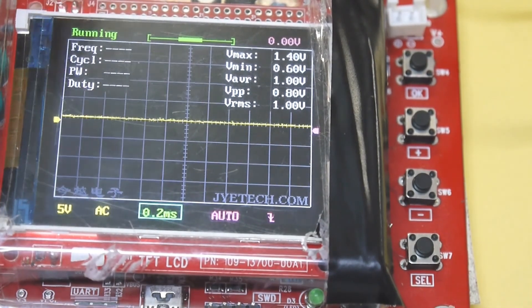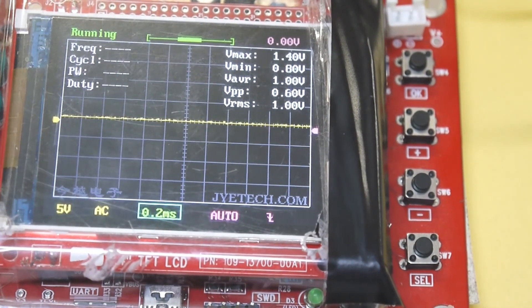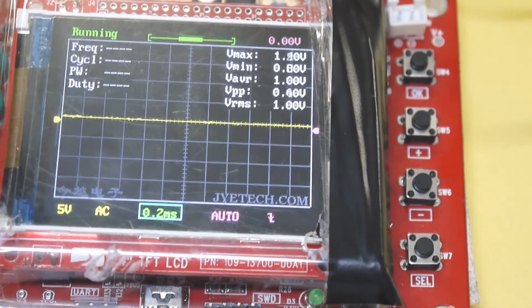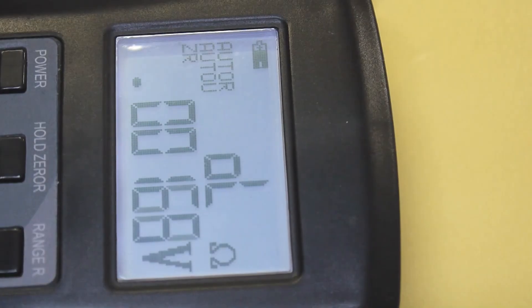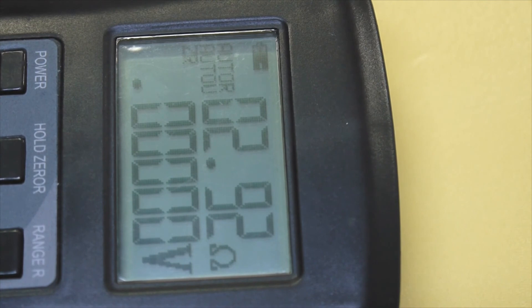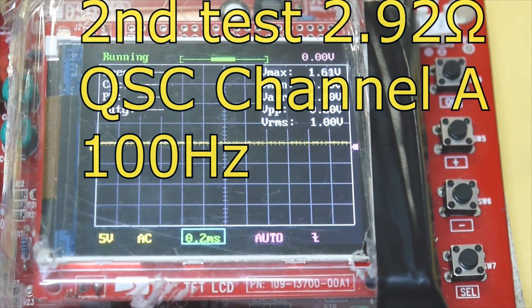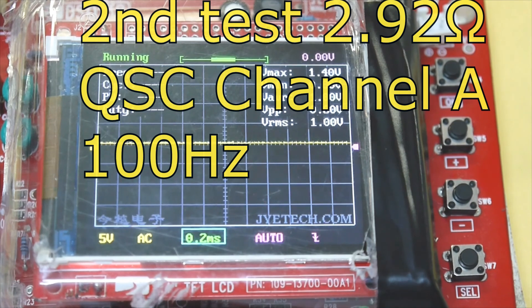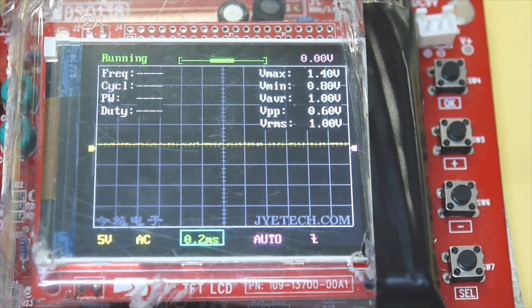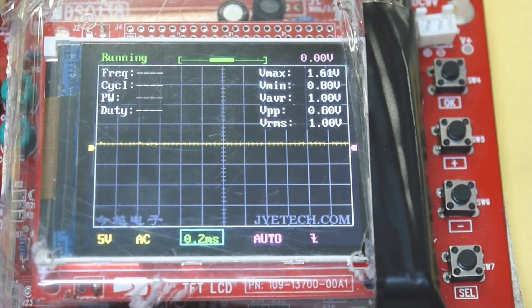Now we have all the subwoofers in parallel, so we should have 2.92 ohms. The second test now, we have 2.92 ohms and we have 100 hertz frequency.